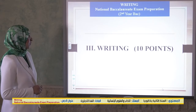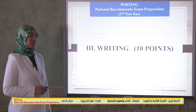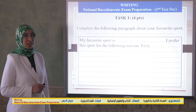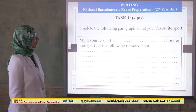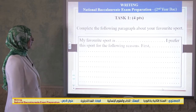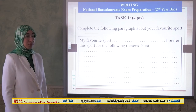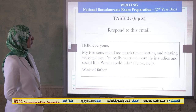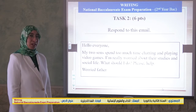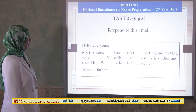The writing section takes 10 points out of 40. Here we have two tasks. Task number one takes four points out of 10: complete the following paragraph about your favorite sports. Task number two takes six points out of 10: respond to this email.